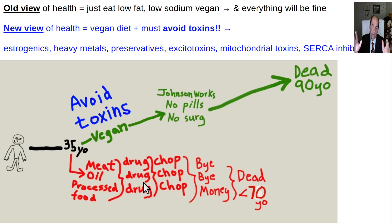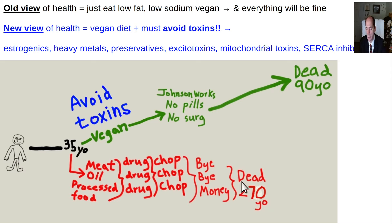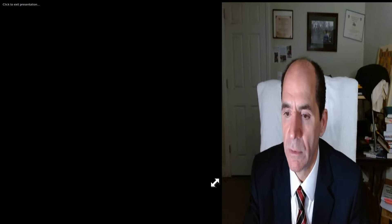When you have a dietary disease and keep progressing on pills that don't work, you end up going for surgery — bye-bye money. Dead prematurely around age 70 or late 60s. And that's it for part five of how glutamate causes brain damage. I hope that was helpful.